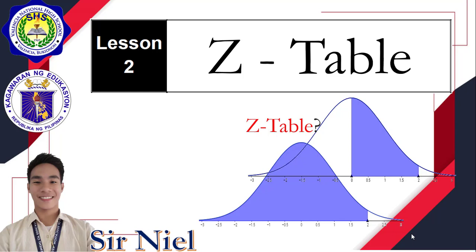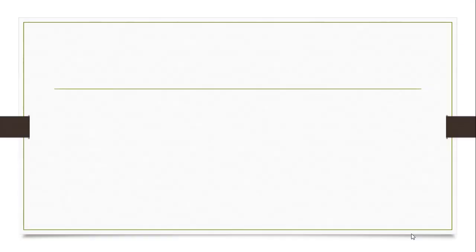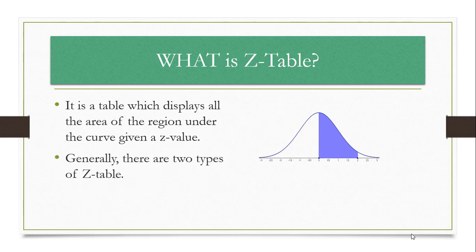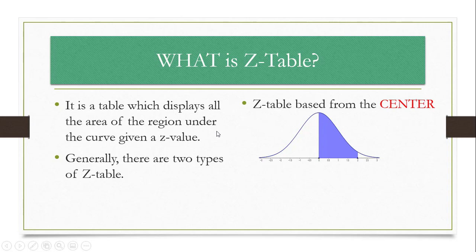So let us know more about what is the Z-Table. The Z-Table is a table which displays all the area of the region under the curve given a Z value. The area given by the Z-Table starts from the center to a particular Z value.